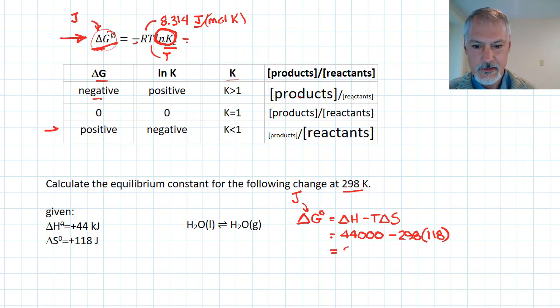And when I solve this, I get about 8,800 joules and I get a positive value for it. So, that's going to suggest to me, because delta G is positive, this reaction is not spontaneous. I would expect an equilibrium constant of less than 1.